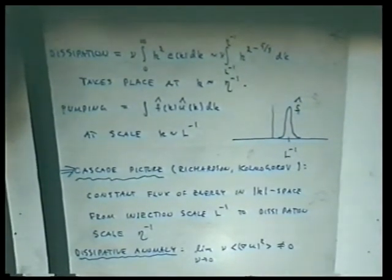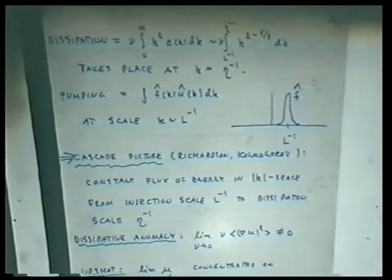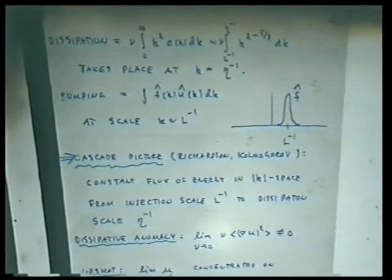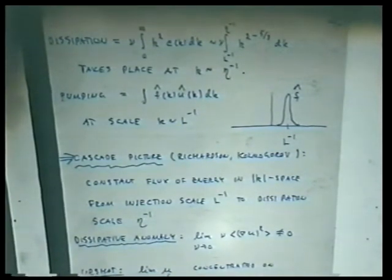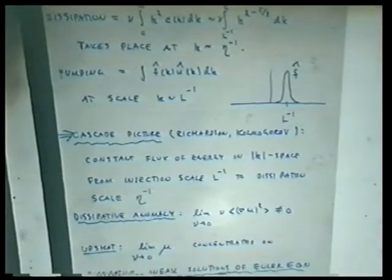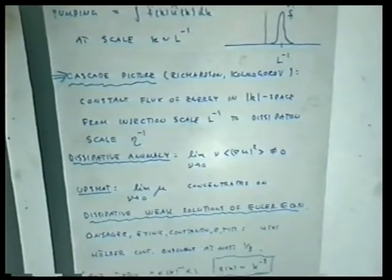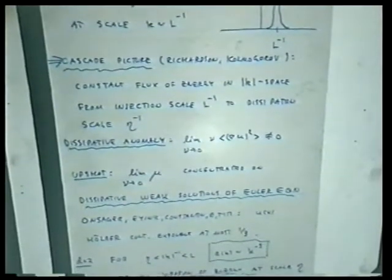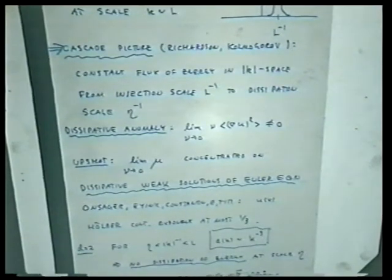This quantity — the energy pumping — is fixed by what you put in. If you keep the spoon moving but just change the viscosity, you pump the same energy, so the dissipation must stay the same. Therefore, this limit must be non-zero — it's given by the pumping. As we observed, the gradient of u squared must become infinite in the limit as viscosity goes to zero — people usually call this the dissipative anomaly. The gradient diverges while viscosity goes to zero, but together they leave a finite trace.